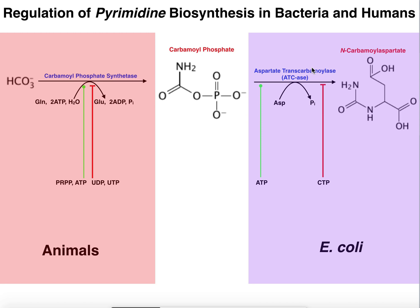These are the major regulatory control points in pyrimidine synthesis. The interesting thing is that depending on what type of organism you are, that changes which enzyme is regulated. Hopefully this form of regulation makes sense — it's a little less complicated than purine regulation, but that's just because pyrimidines are a little less complicated.